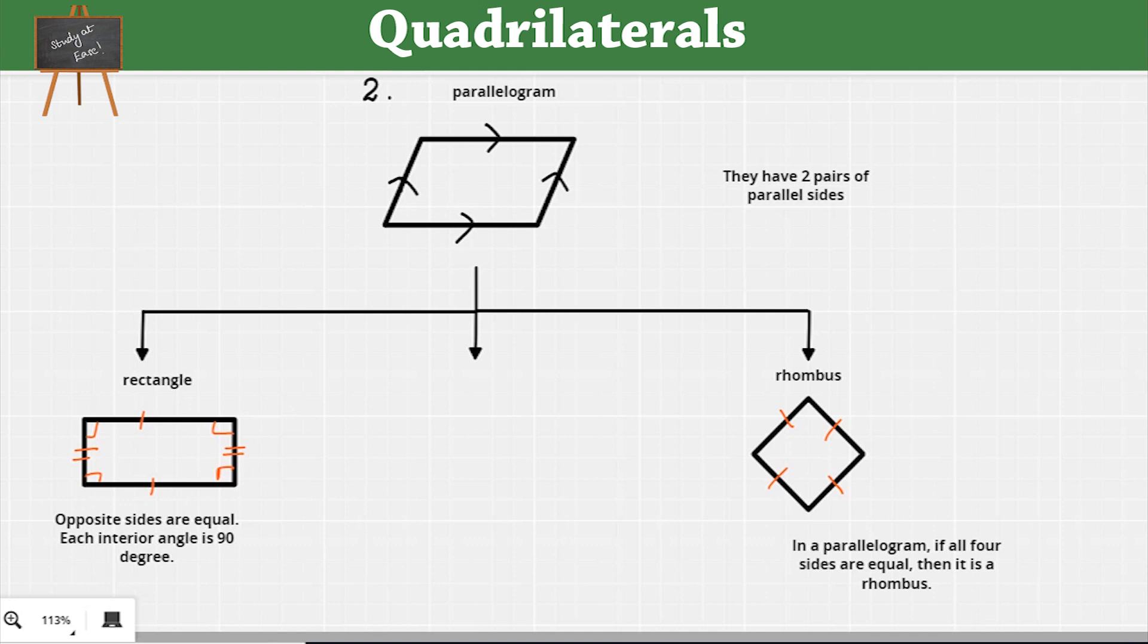Now, let's talk about the last one, which is the square. The square, as you can see, has all sides equal, which is the same as a rhombus. As well as, in a square, all the corner angles are right angles. That means they are all 90 degrees, which is similar to the rectangle.